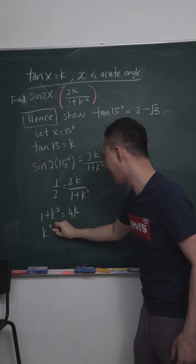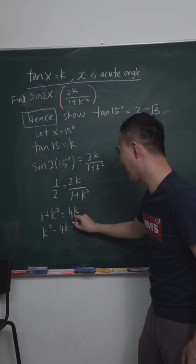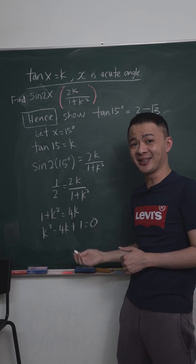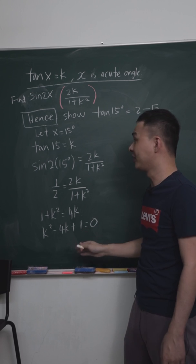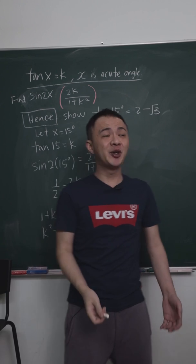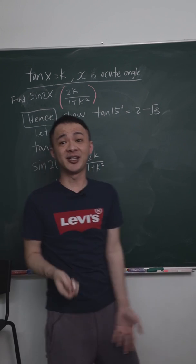Then k squared minus 4k plus 1 equals 0. And then you should know this one is basically the quadratic equation. Then what we want to do is we need to solve the quadratic equation. And we have a formula for this kind of quadratic equation, isn't it? The formula is basically x equals negative b plus minus square root b squared minus 4ac divided by 2a.